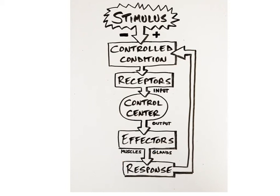This is what is meant by feedback, where the response feeds back into the system to make adjustments to the controlled condition. The effect of muscles is to contract, and the effect of glands is to secrete a hormone or other chemical signal in order to change the condition.